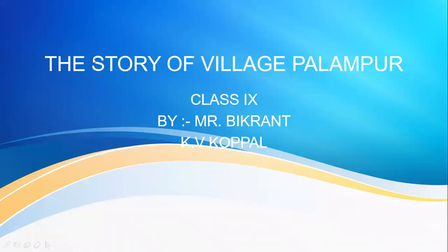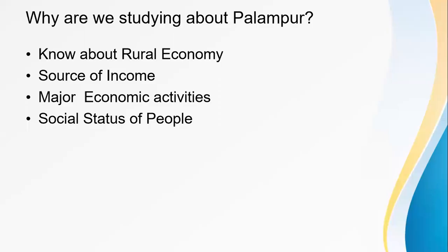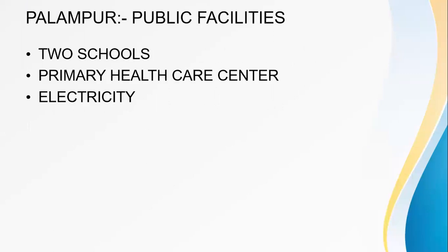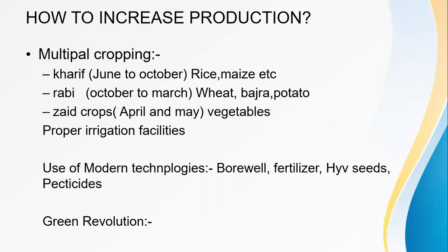Good morning children. As we were discussing about Class 9th Economics, the chapter 'The Story of Village Palampur,' this is Part 3 of the lecture. Last day we discussed how to increase production on the same piece of land. The first method is multiple cropping, the second method is proper irrigation facility, and the third one is use of modern technology.